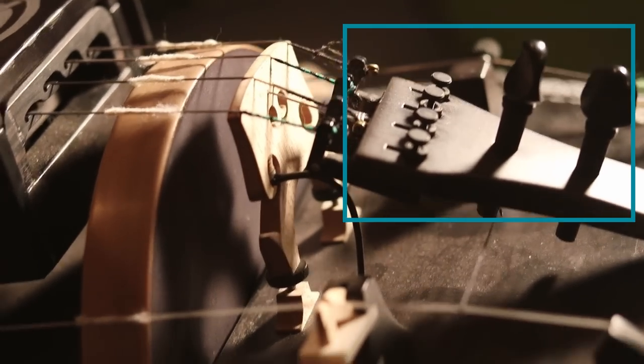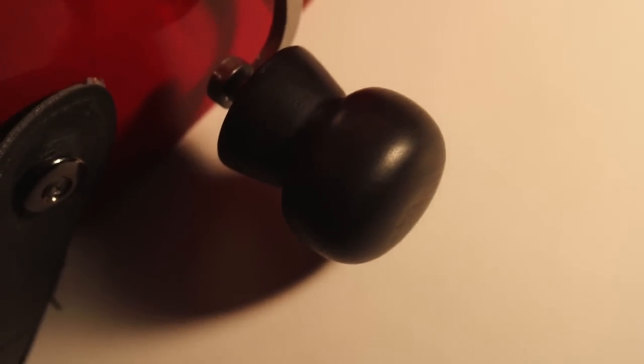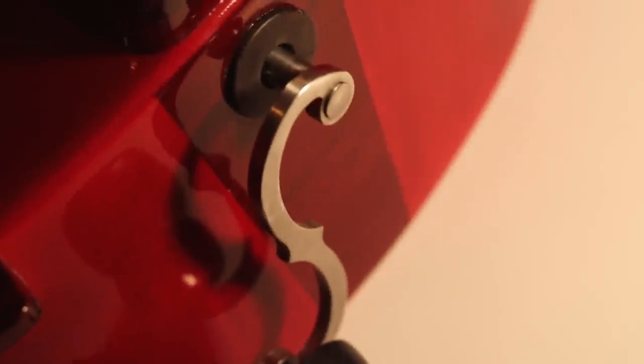Here's a tailpiece, it holds the strings on the crank side so they are tense. The crank is usually made out of metal with a wooden handle. You use it to turn the wheel.